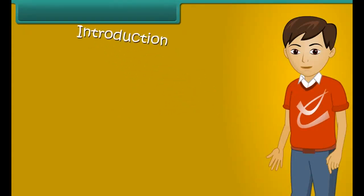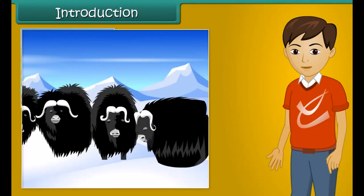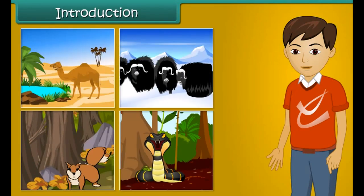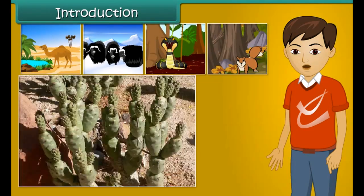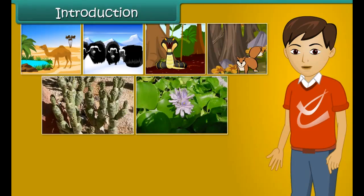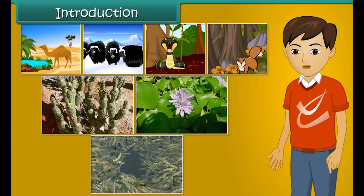Hello students. Look at the images given here. Camel, jackal, squirrel, and snakes are all terrestrial animals, but their physical appearance and behavior are very different from each other. Similarly, plants like cactus, water hyacinth, and hydrilla are also different in their physical appearance and behavior.